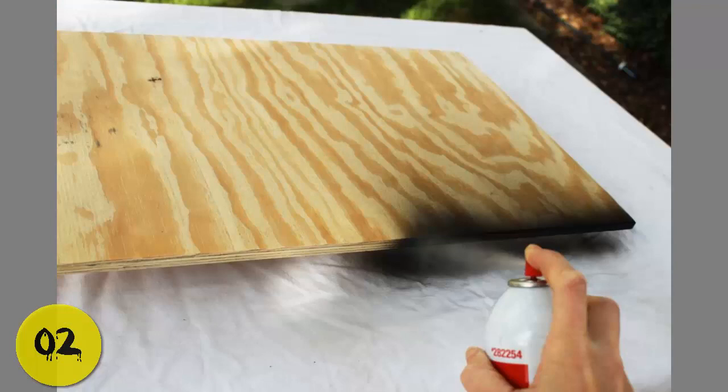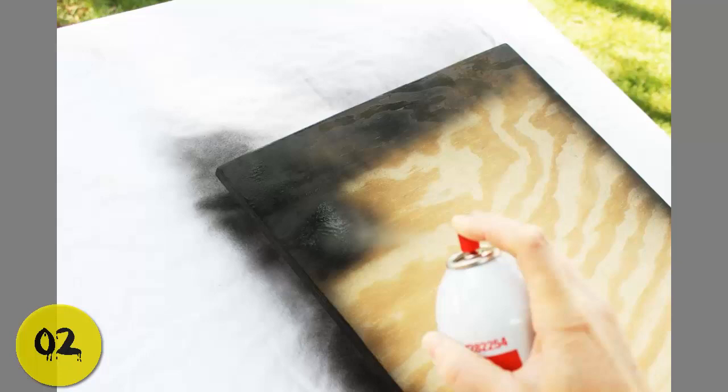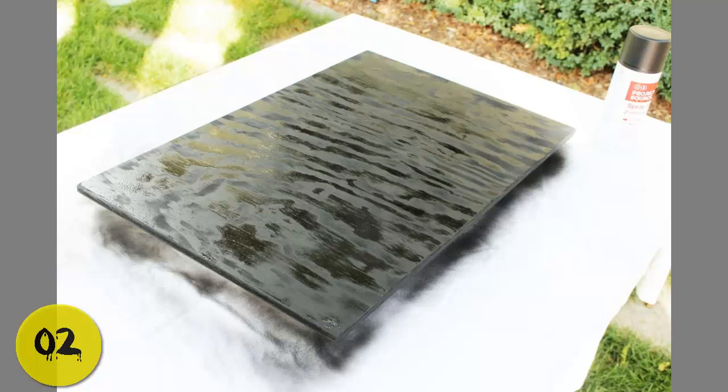Step 2: Prepare, shake your can of matte flat black spray paint. Start with lightly spraying all four sides of your plywood. Remember, a light hand for spray paint is always better than a heavy, drippy one.